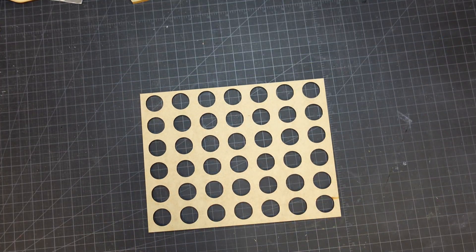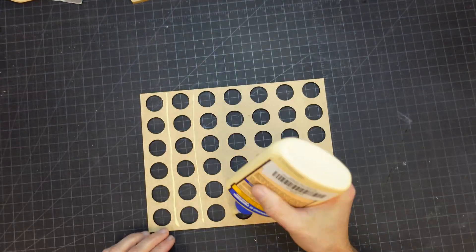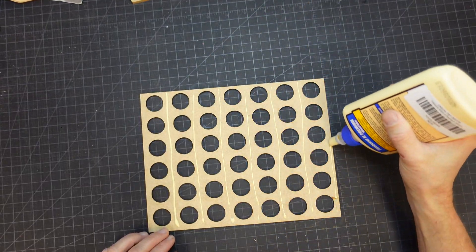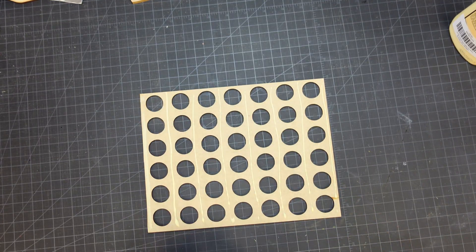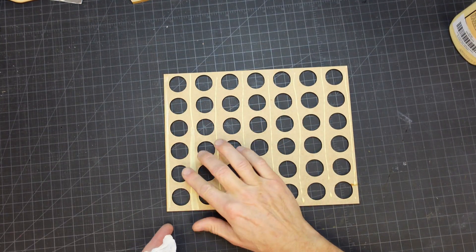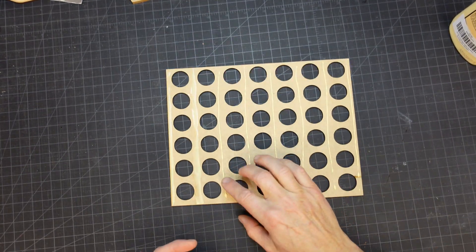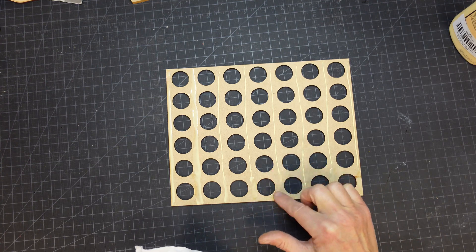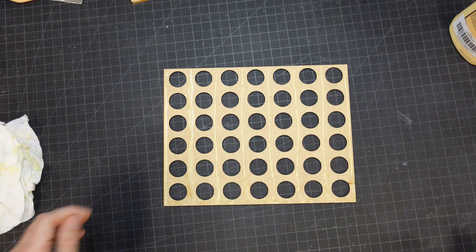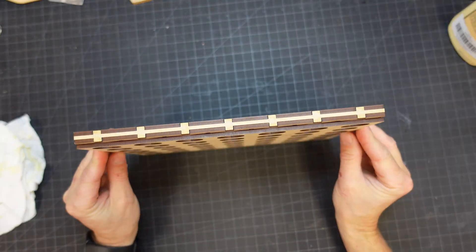I next glued what I would sort of call cosmetic pieces to the front and back of the main assembly. These were never necessary, but it made the entire thing look cleaner. It was after doing this that it was suggested to me that the holes here could have instead been cut into different silhouette shapes to make this more interesting. Oops, too late.